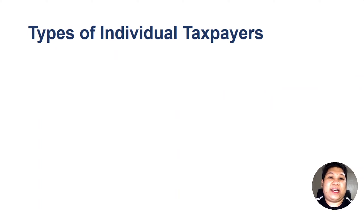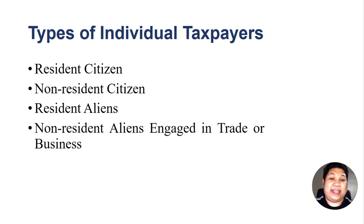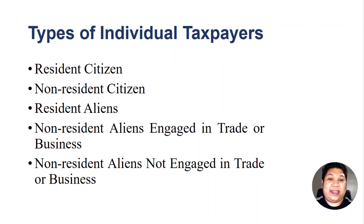There are different types of individual taxpayers and we have discussed already the five of them in our other video lectures. As a recap, we have the resident citizen, the non-resident citizen, resident aliens, non-resident aliens engaged in trade or business, and non-resident aliens not engaged in trade or business. Among the five, one of them is subject to a fixed final rate of 25%, and that is the non-resident alien not engaged in trade or business.